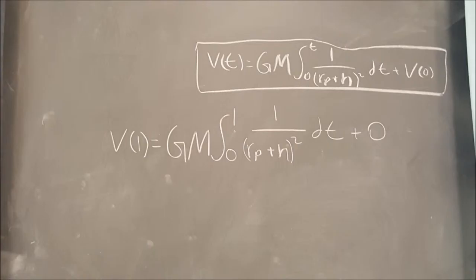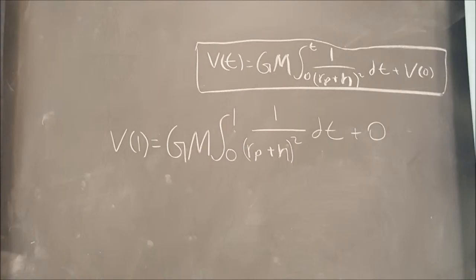So then we moved over V0, and we got V of T is equal to GM from the integral from zero to T, one over Rp plus H squared, dt, plus V0. So then to make sure that this equation worked,